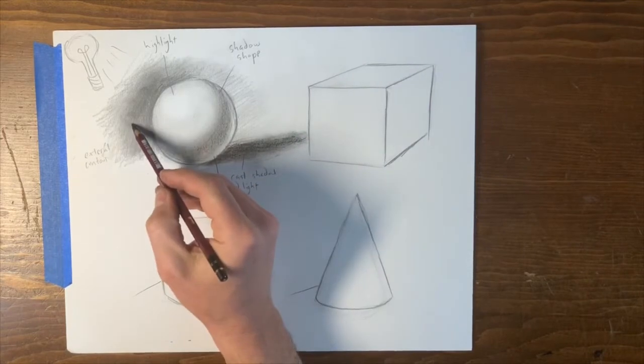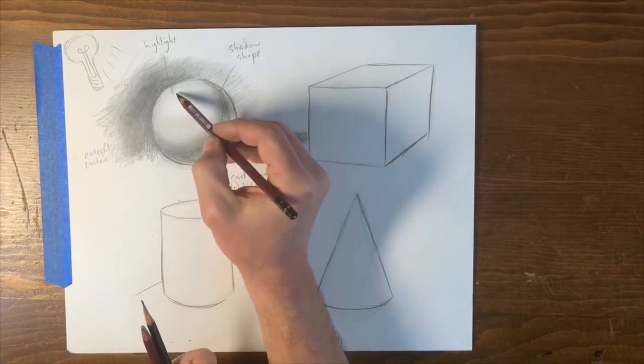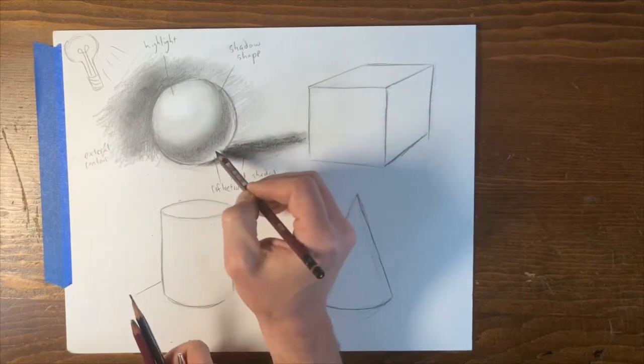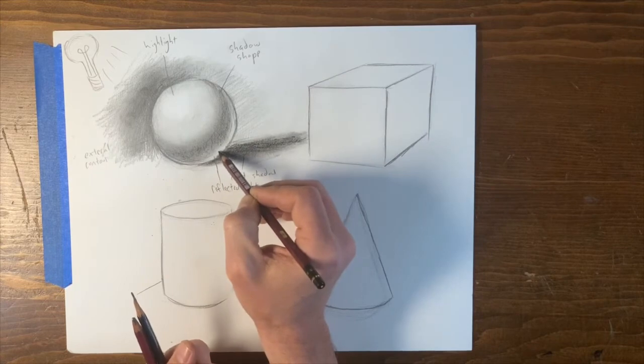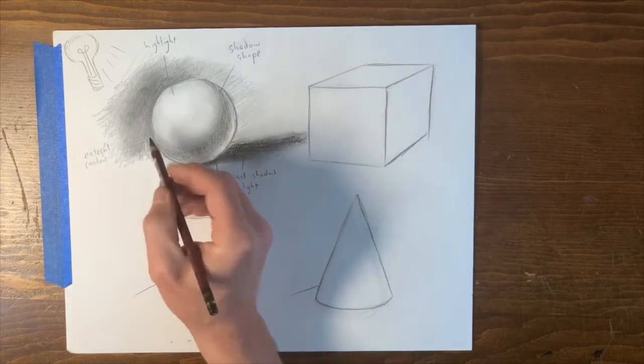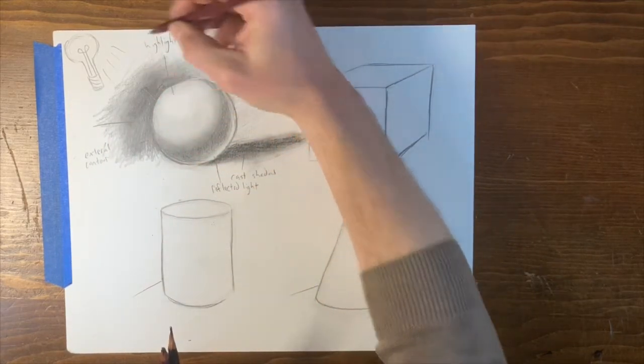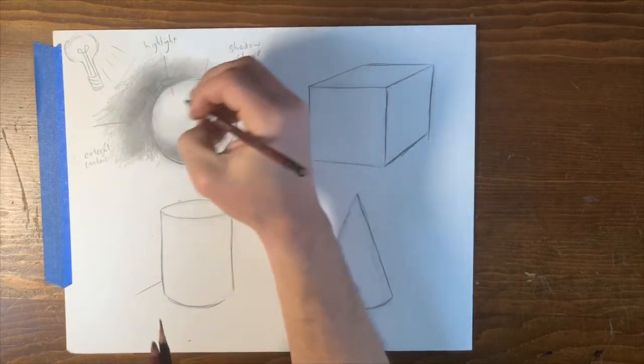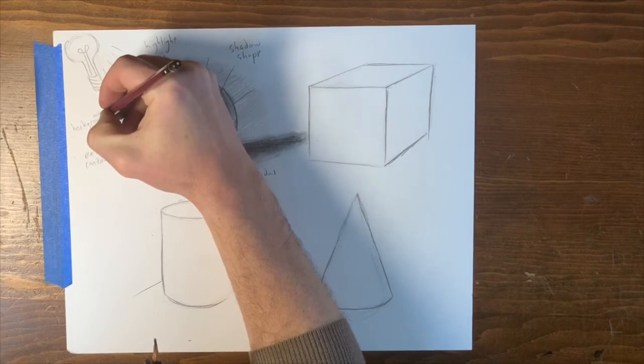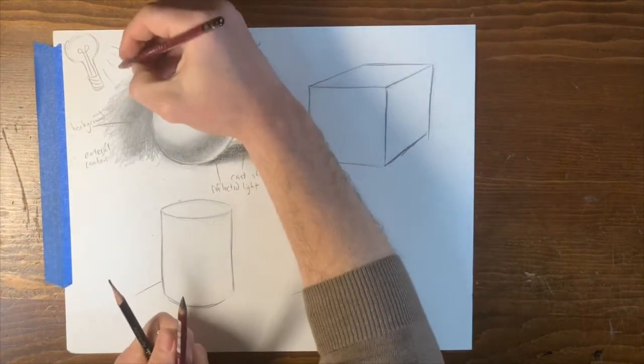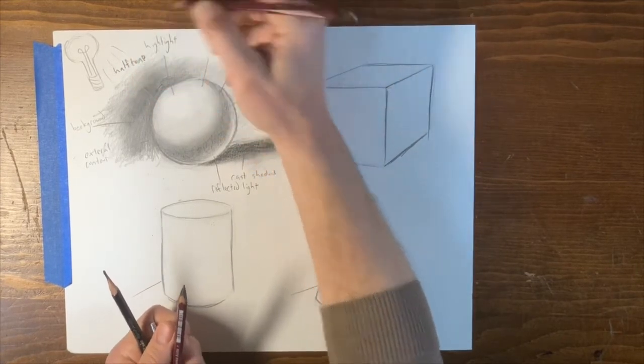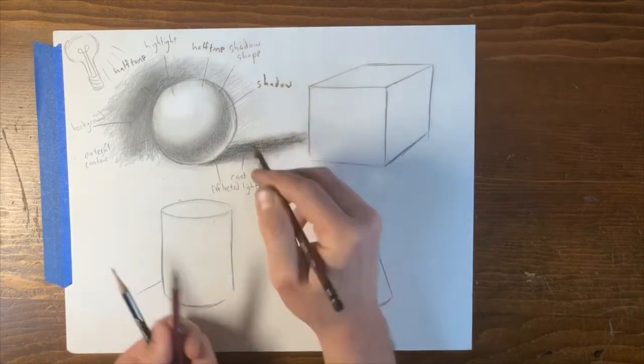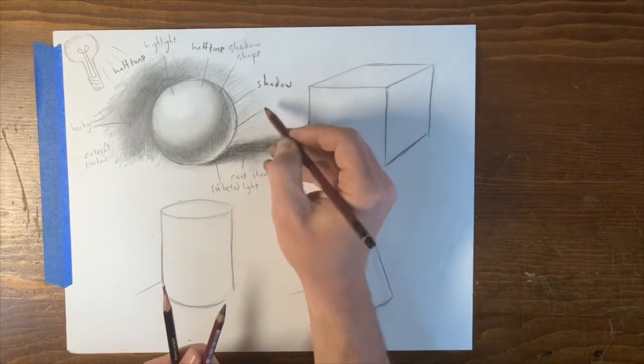Okay, so here we have background, external contour, mid-tone, highlight, then we have mid-tone, the shadow shape, which ultimately is absorbed into everything else, we can call this shadow, reflected light, external contour, cast shadow. Sometimes, I'll even put a little burst of light right here, just to heighten that sense of light of going around the form.